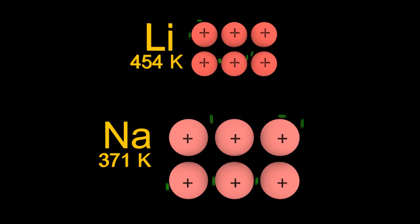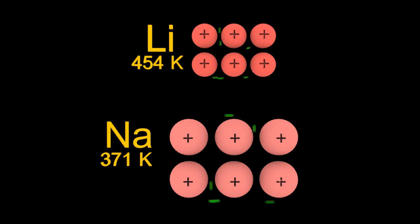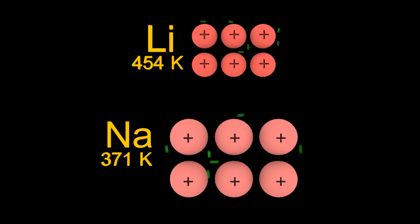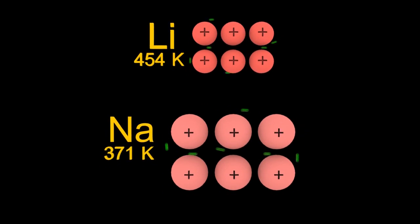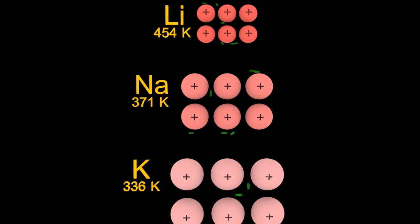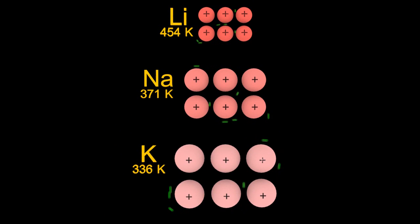Now sodium ions are bigger but they have the same charge, so that means that charge is more diffuse on this larger ion, so there's less electrostatic attraction. It has a lower charge density, and potassium ions have an even lower charge density still.